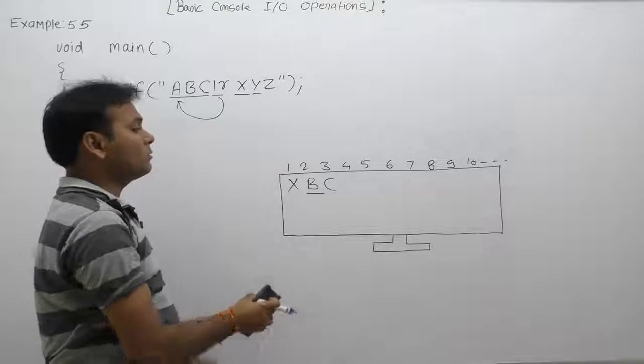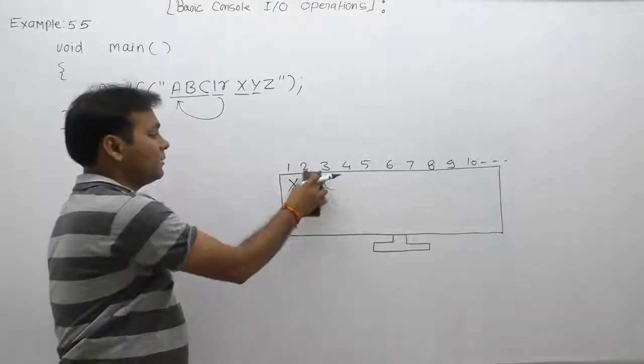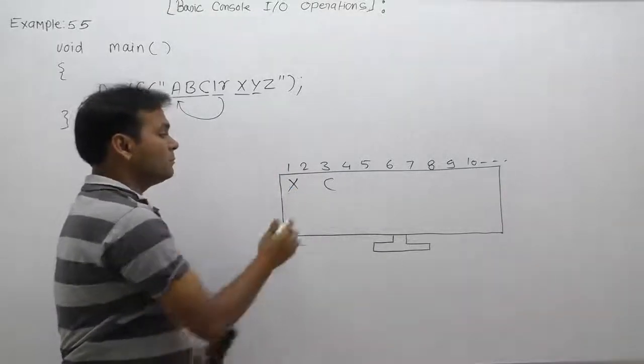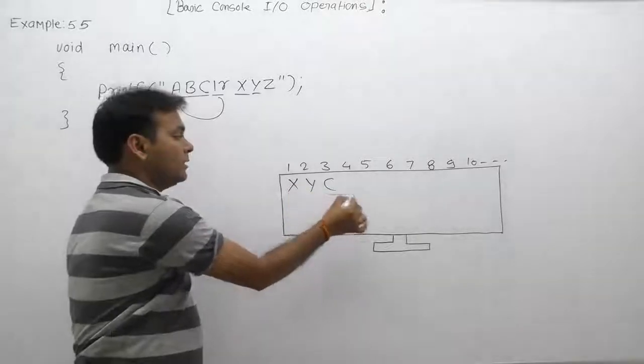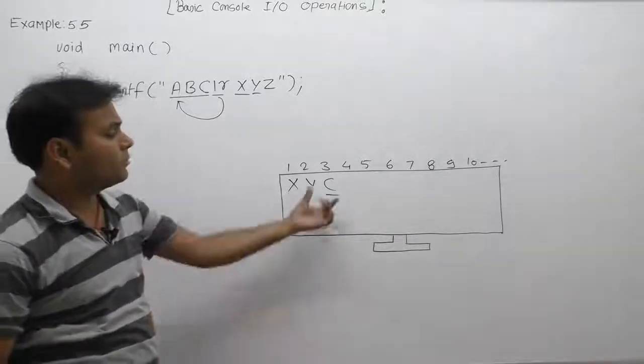Next one is Y. Y is also printable, therefore B is replaced by Y. Then cursor will be available on the next character or next position inside C.